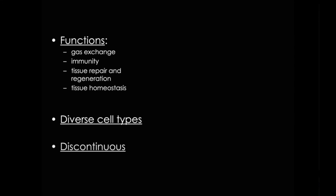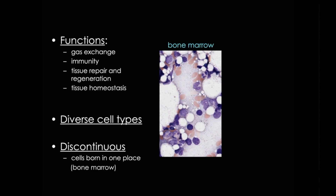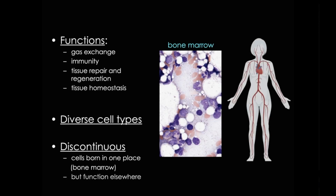Importantly, blood is considered a discontinuous tissue. Now what does that actually mean? Well, it means that blood cells are born in one place — in this case the bone marrow — but they function in another place; in this case, they function all over the body. This means that the body also has to have an intricate signaling system designed to detect when those specific cells are needed, and get that message to the bone marrow so that it can increase or decrease production.